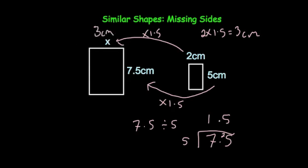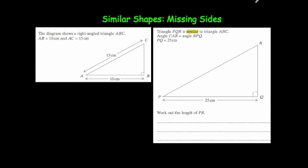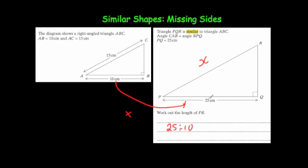Let's have a look at some exam questions. The diagram shows a right angle triangle ABC, and PQR is similar to ABC. The angle CAB is the same as angle RPQ. We need to work out the length PR — let's call it X. First, find the scale factor of enlargement: 25 divided by 10 equals 2.5. So this triangle is 2.5 times bigger than this triangle.